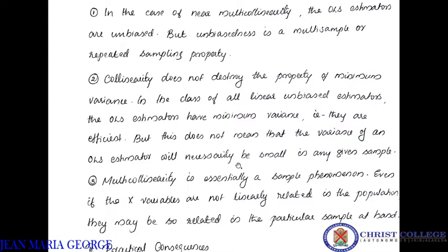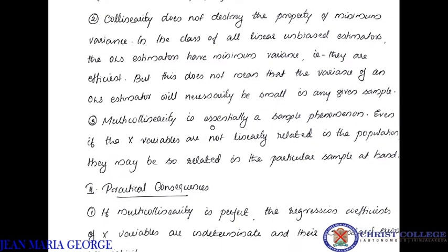But this does not mean that the variance will necessarily be small in any given sample. Minimum variance means best among all estimators, but the actual variance value may not be small. Because of collinearity, we call it variance minimum, but it is not a small value. There is a possibility of a large variance — this is one of the theoretical consequences.